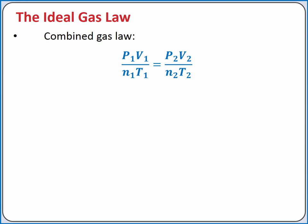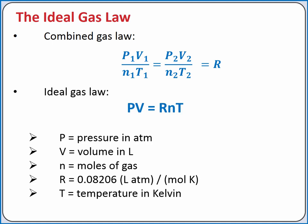This is essentially saying that pressure times volume divided by moles of gas and temperature in Kelvin is a constant, which we can call R. The ideal gas law uses this constant and rearranges the equation slightly to be pressure times volume equals the ideal gas law constant R times moles of gas times temperature in Kelvin.